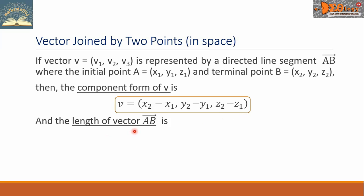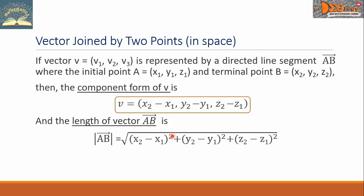Now, the length of vector AB is given by this formula: length of vector AB equals the square root of the quantity, the square of (X sub 2 minus X sub 1), plus the square of (Z sub 2 minus Z sub 1), plus the square of (Z sub 2 minus Z sub 1).